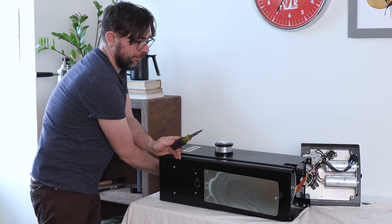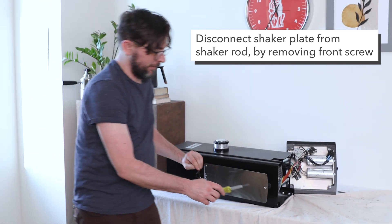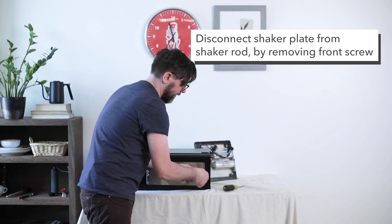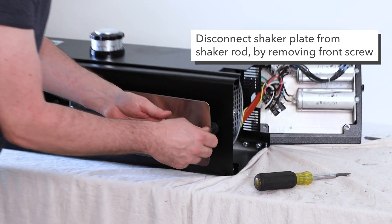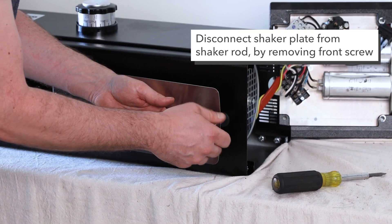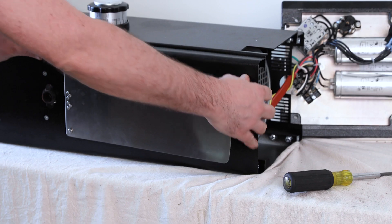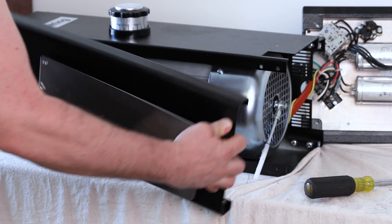So we've gotten all the bolts out, and before we completely remove the front panel, I still need to disconnect the shaker plate from the shaker rod. Just remove this Phillips head screw. Okay, set that aside. Now I can remove the entire front plate.